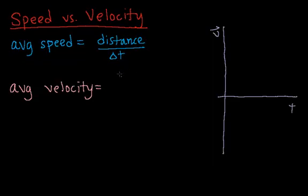Now, average velocity is defined as displacement over change in time. If you don't know the differences between distance and displacement, I would suggest you go back to my previous video where I describe how distance is a scalar and displacement is a vector.